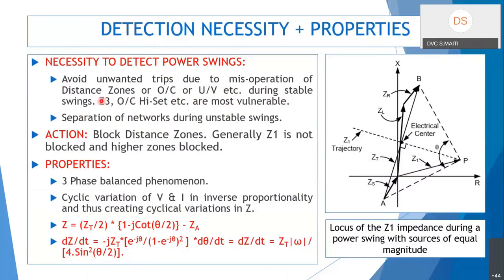It is also important to detect power swing when we want to separate networks during an unstable power swing — that is known as power swing tripping, not blocking. But in the majority of this section, we will talk about power swing blocking, not tripping.